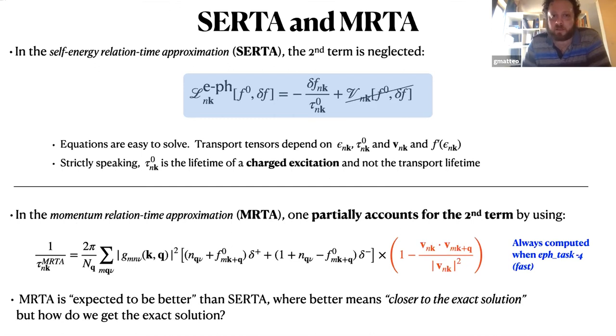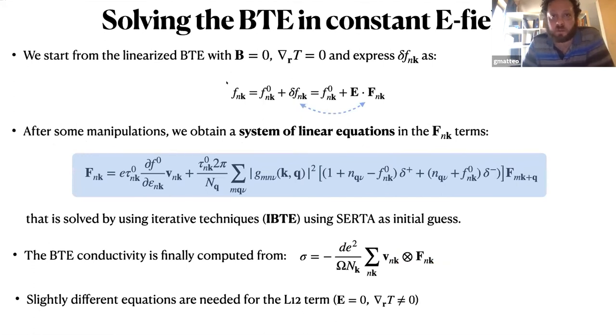The other approximation is the MRTA, that stands for momentum relaxation time approximation, in which one tries to partially account for this term by just introducing this efficiency factor that dumps scattering events with small momentum transfer, because these events are not supposed to deteriorate the electric current. Now, there are some qualitative arguments that tell us that the MRTA approximation is expected to be better. But here, for better, I mean something that is closer to the exact solution. So the question is, how do we solve the exact solution, the Boltzmann equation?